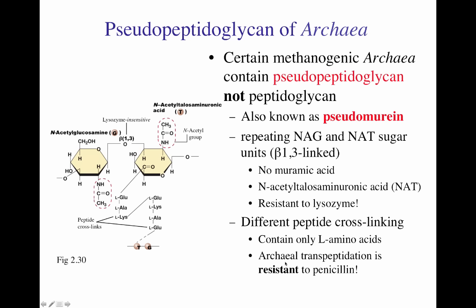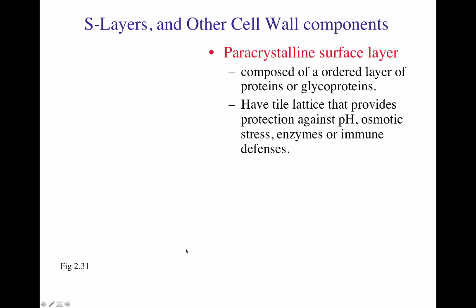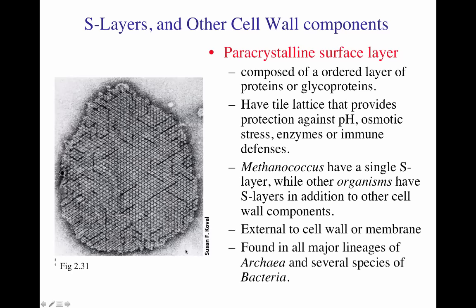The process by which amino acids are linked together is called transpeptidation, mediated by the enzyme transpeptidase. In bacteria, transpeptidase is sensitive to the antibiotic penicillin. Because of the different amino acids present in archaeal peptidoglycan, transpeptidation in archaea is resistant to penicillin.